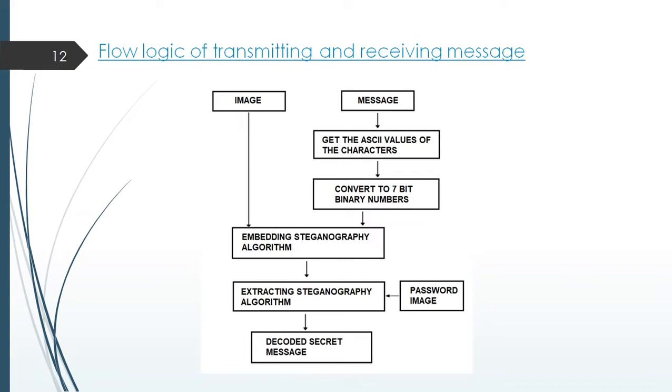This diagram shows the flow logic of transmitting and receiving message. The message to encrypt is a sequence of characters. This sequence of characters is converted into a sequence of ASCII values and then to binary values. Now the message has been converted into its binary equivalent. The encryption algorithm uses this binary string and the RGB image to embed the message inside the image.